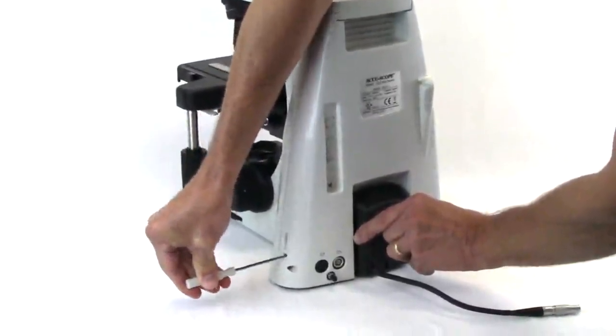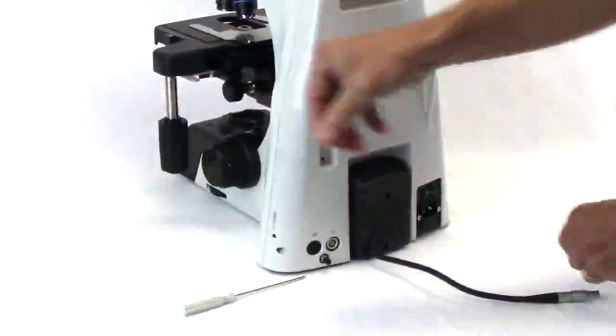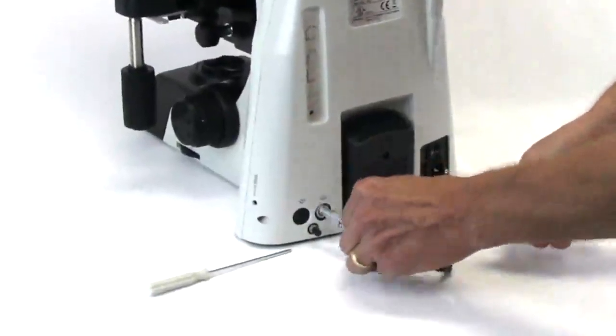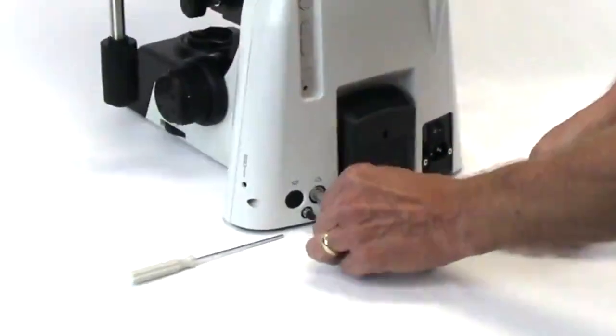Align the red dot on the LED lamp housing cable plug with the red dot on the top of the lamp house power port on the back of the microscope and slide the plug into the port.